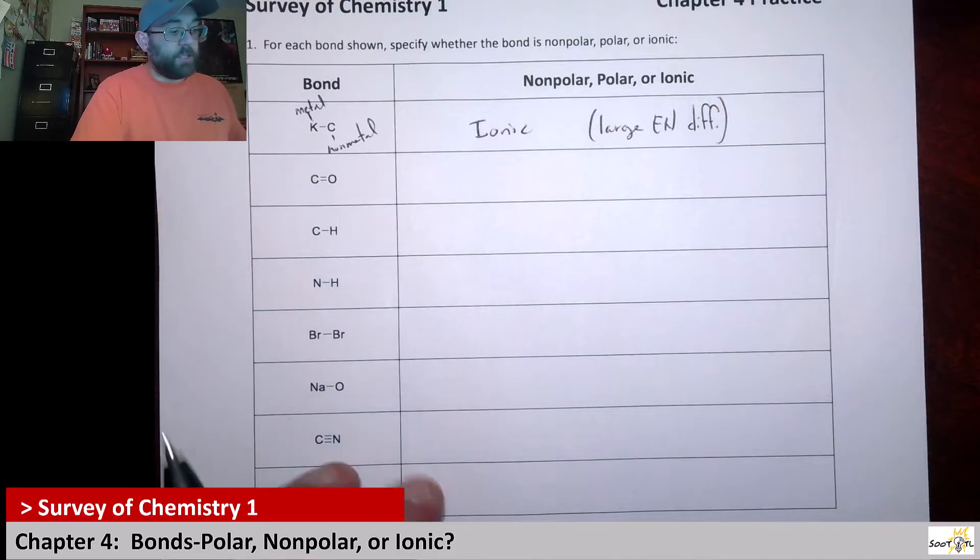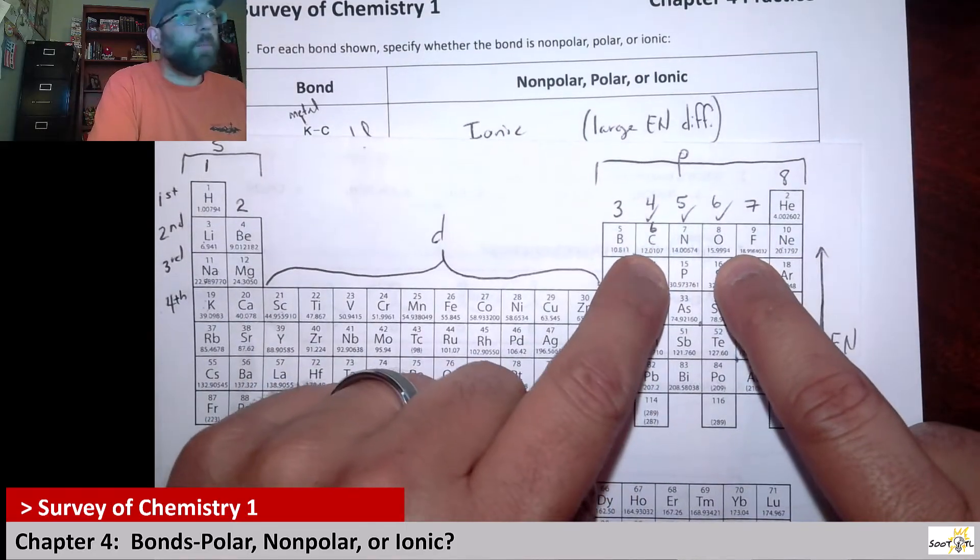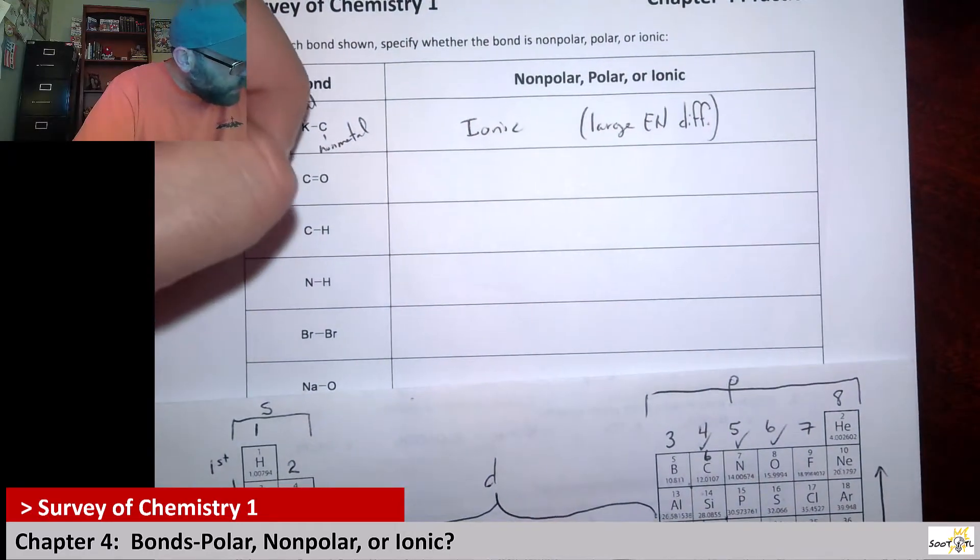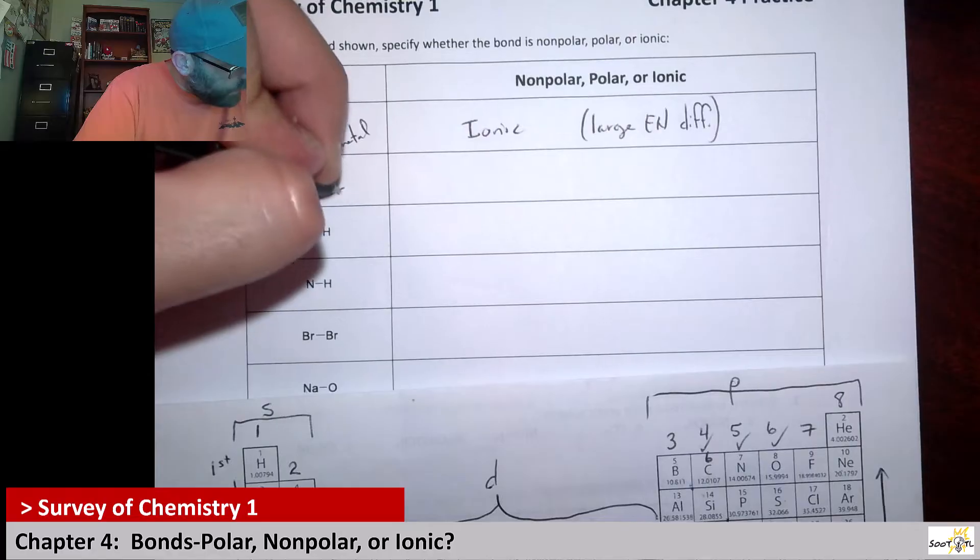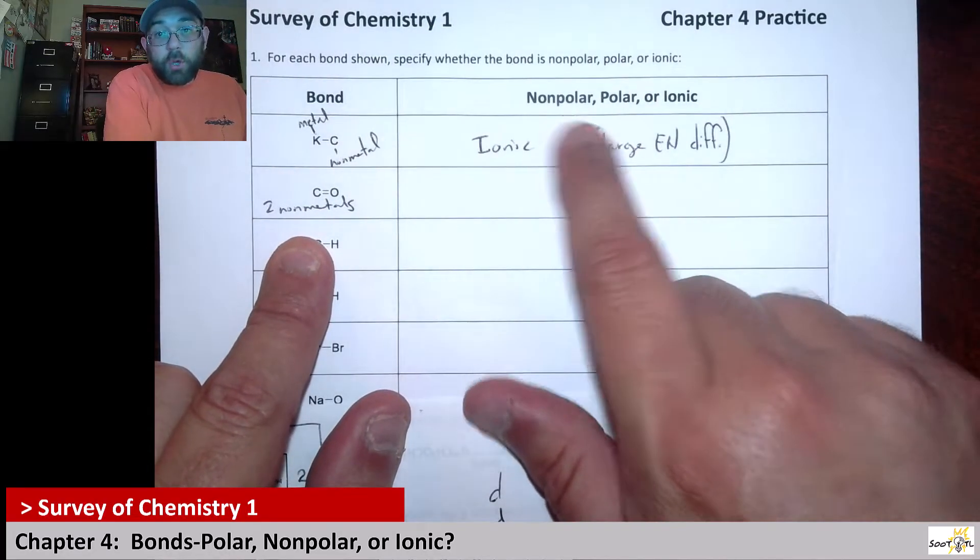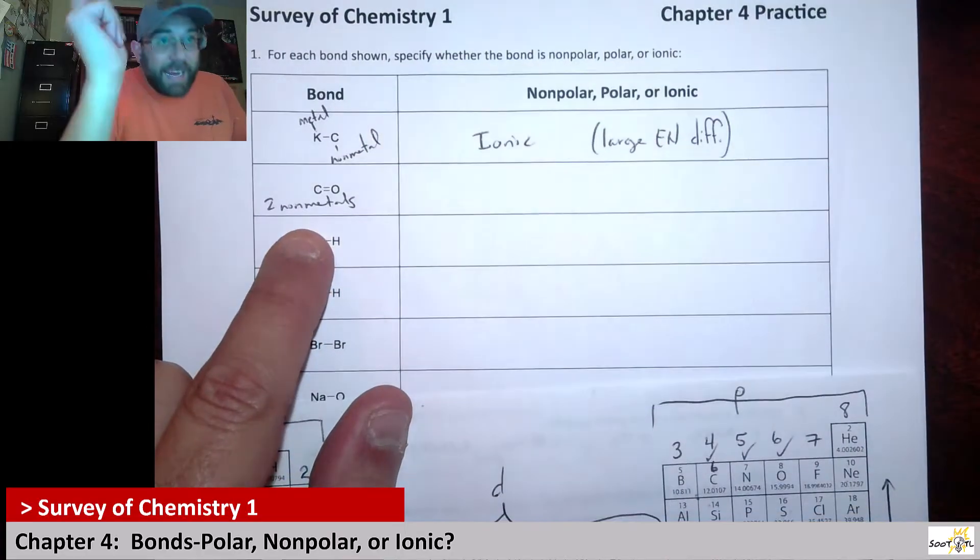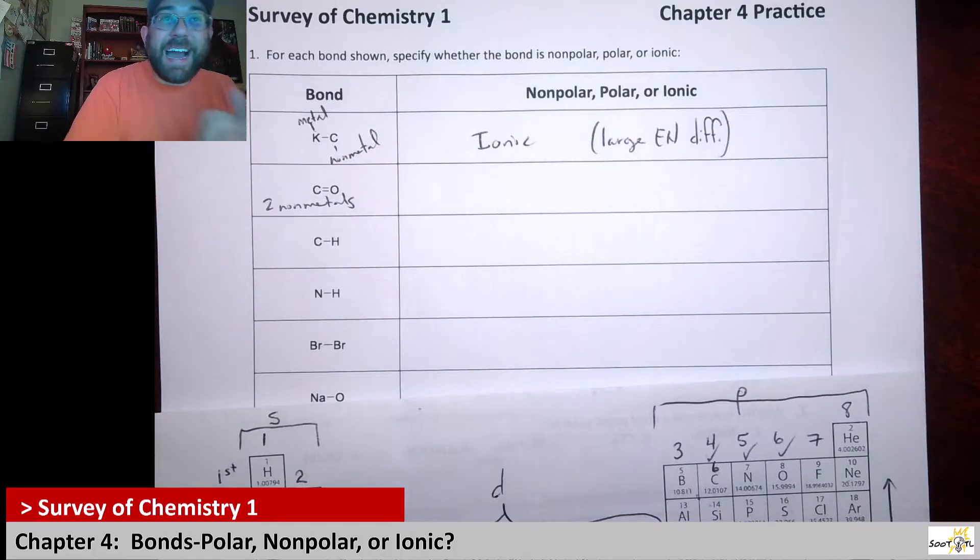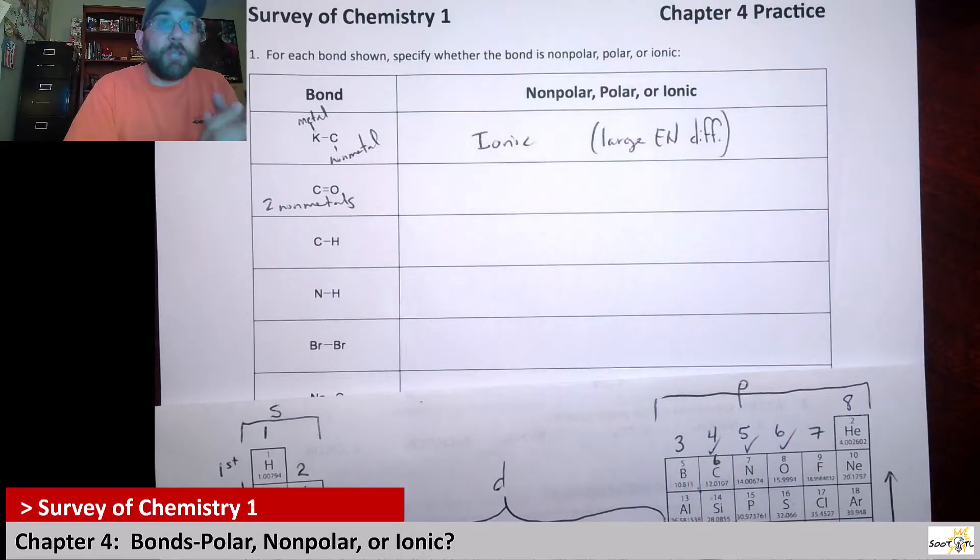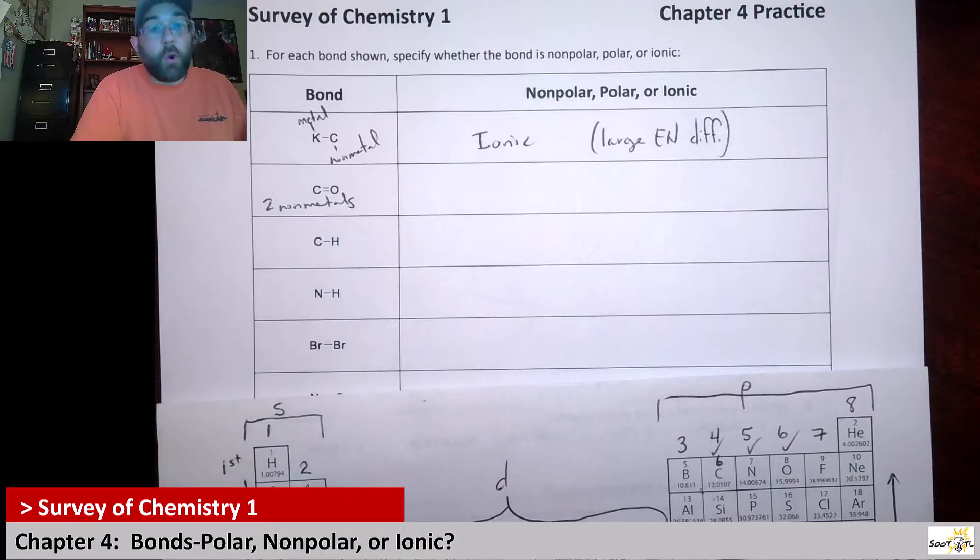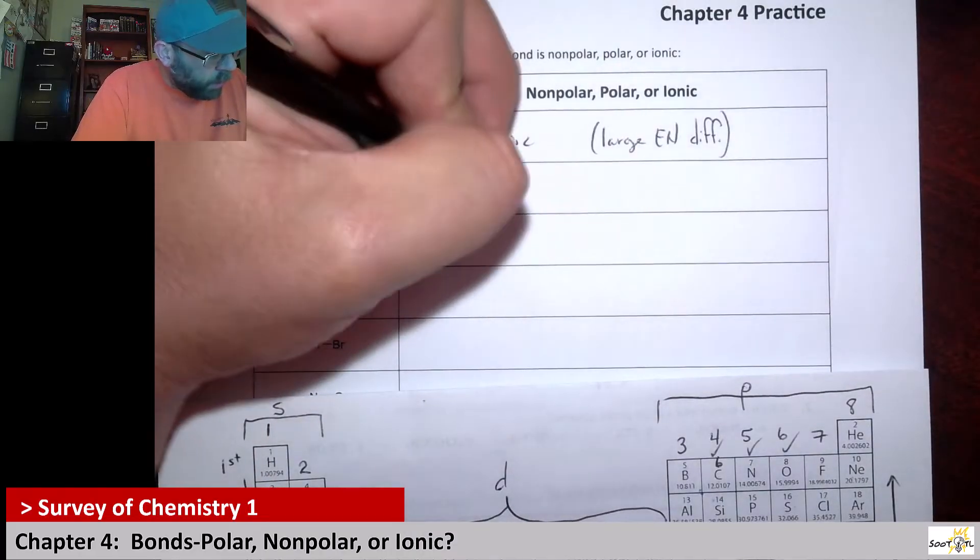Here we have a carbon and an oxygen. Now if we look at their placement on the periodic table, they're both nonmetals. So that in and of itself, you have two nonmetals, that gets rid of the fact that it could be ionic. So it's either polar or nonpolar. And what you're going to see here is these two, 90% of the time when you have two nonmetals bound together and they're different, carbon is different than oxygen, they are going to be polar.